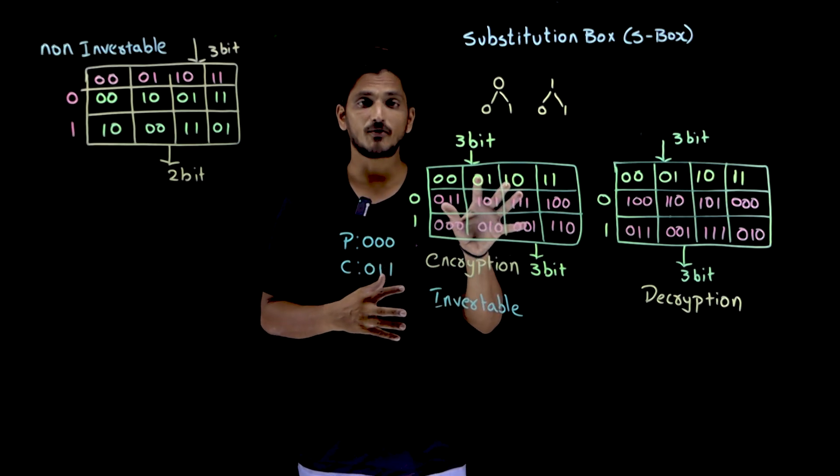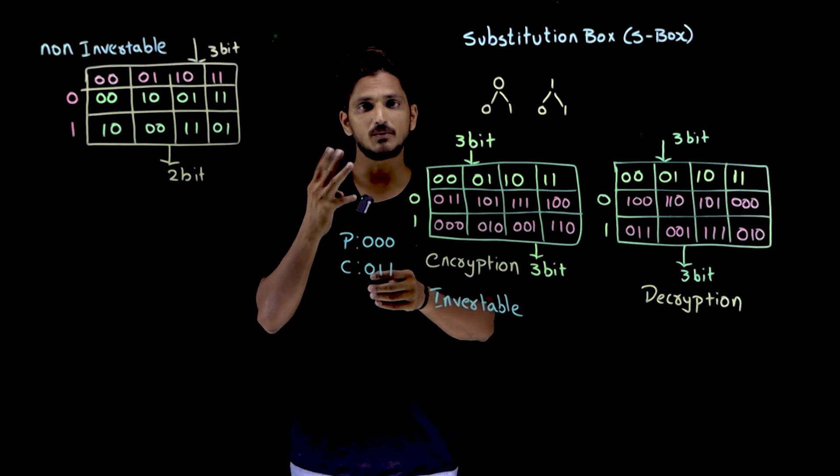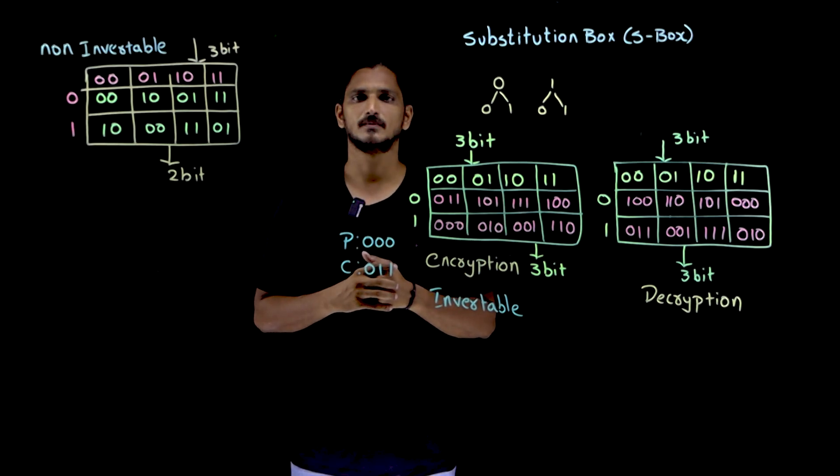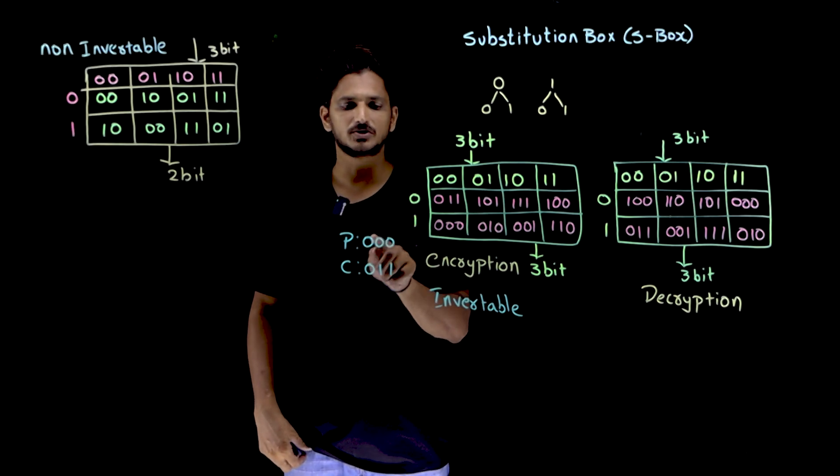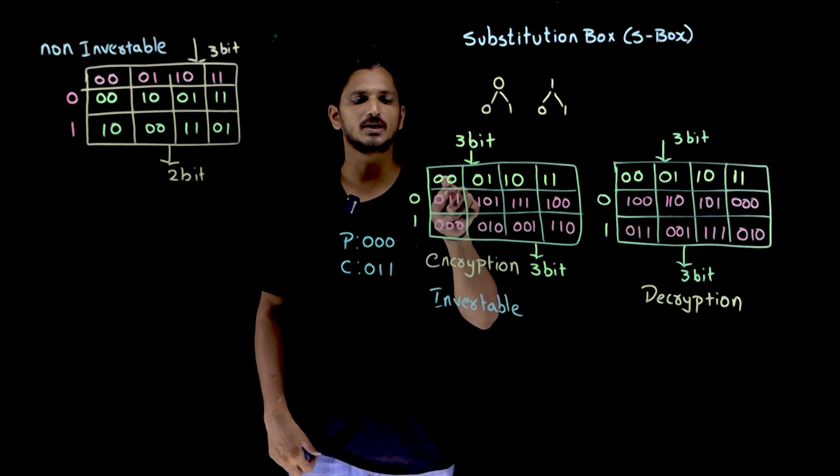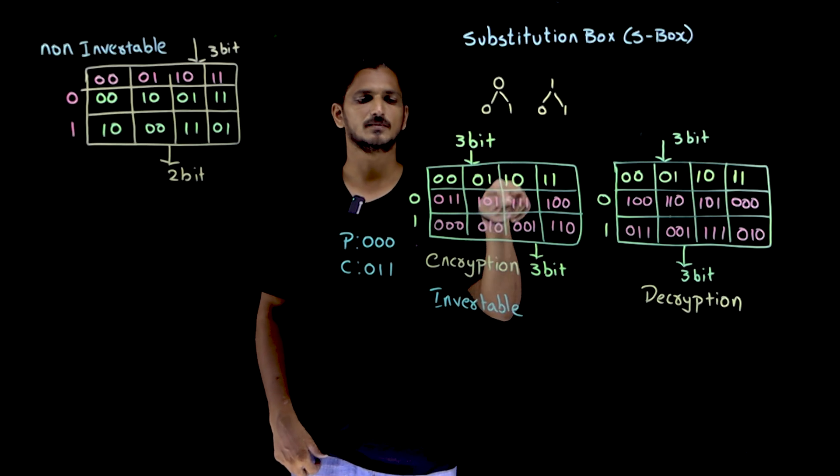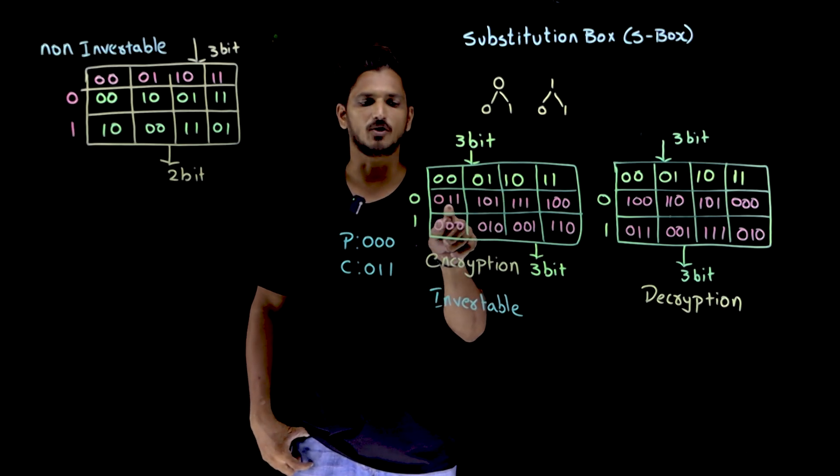So this is one kind of substitution tables which we are going to provide. For 3 bit inputs, if your input is 0 0 0, the first 0 will be checked in the row wise. The second two 0s will be checked in the column wise. So this row, this column.